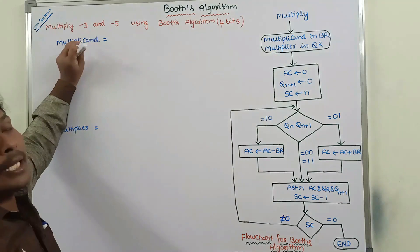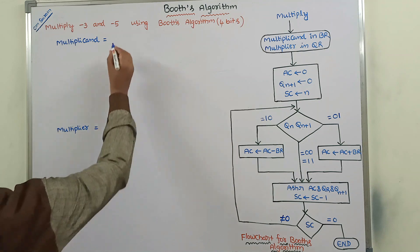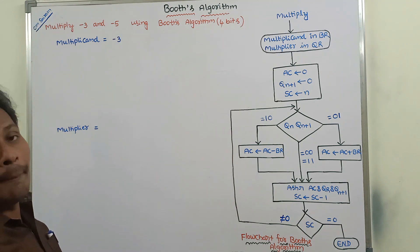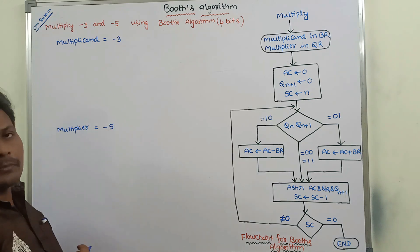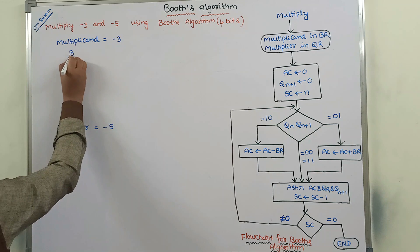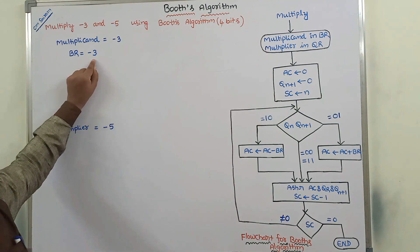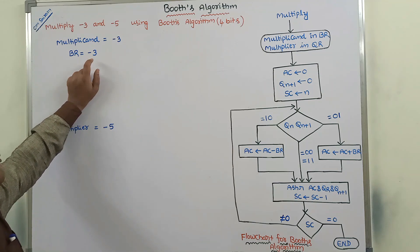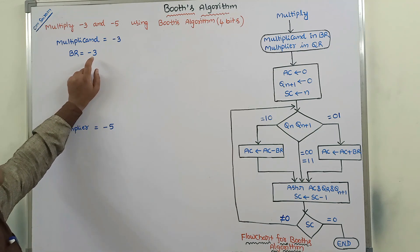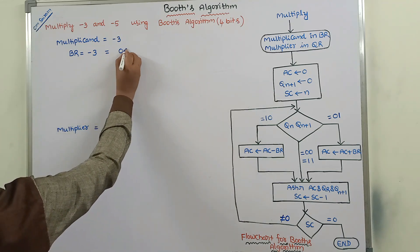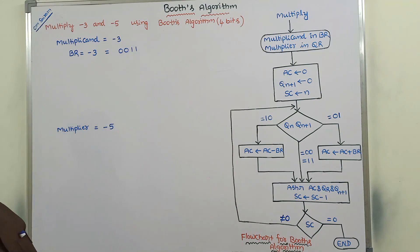Minus 3 is called the multiplicand and is stored in the BR register. Minus 5 is called the multiplier and is stored in the QR register. BR contains the value minus 3. Minus 3 is a negative number. To represent a negative number, we have to use 2's complement. To find the 2's complement of minus 3, first we write the binary form of 3 in terms of 4 bits: 0, 0, 1, 1.